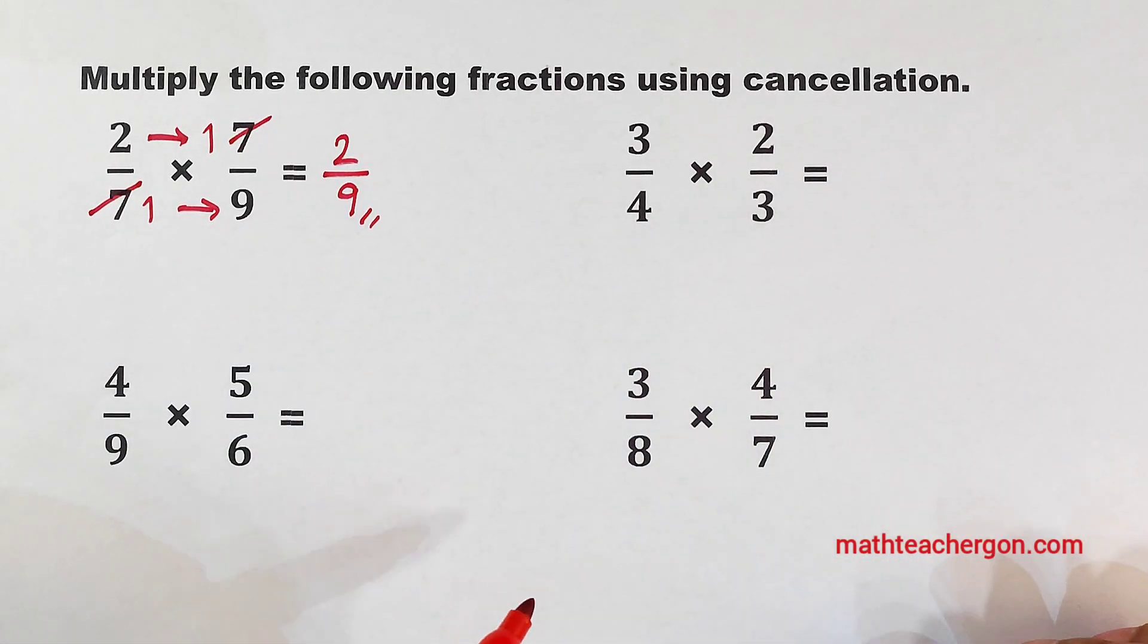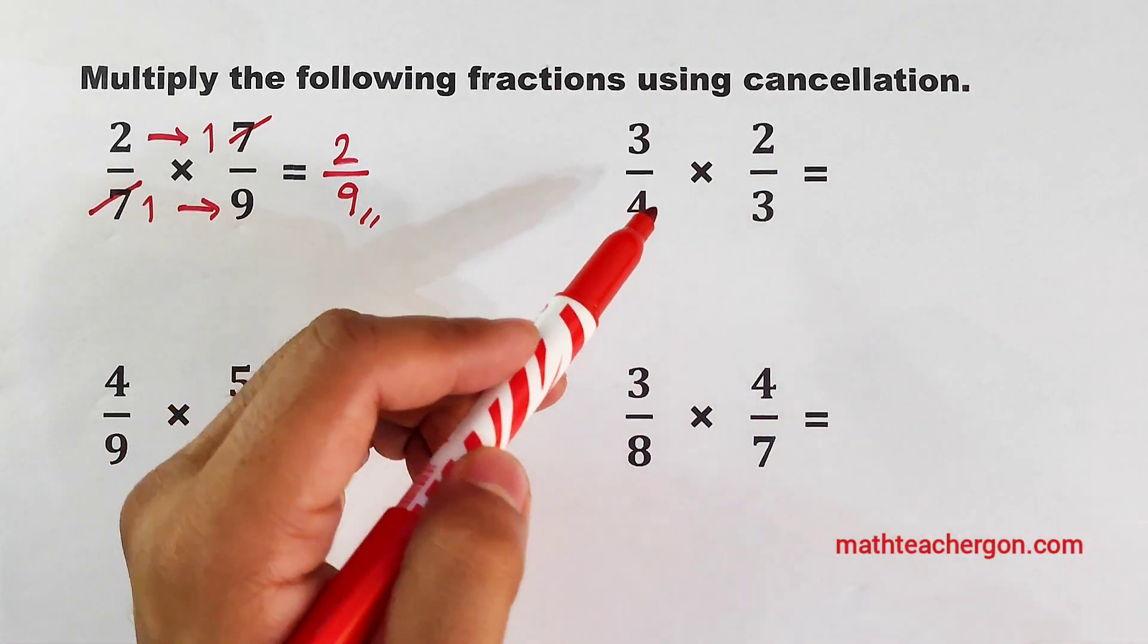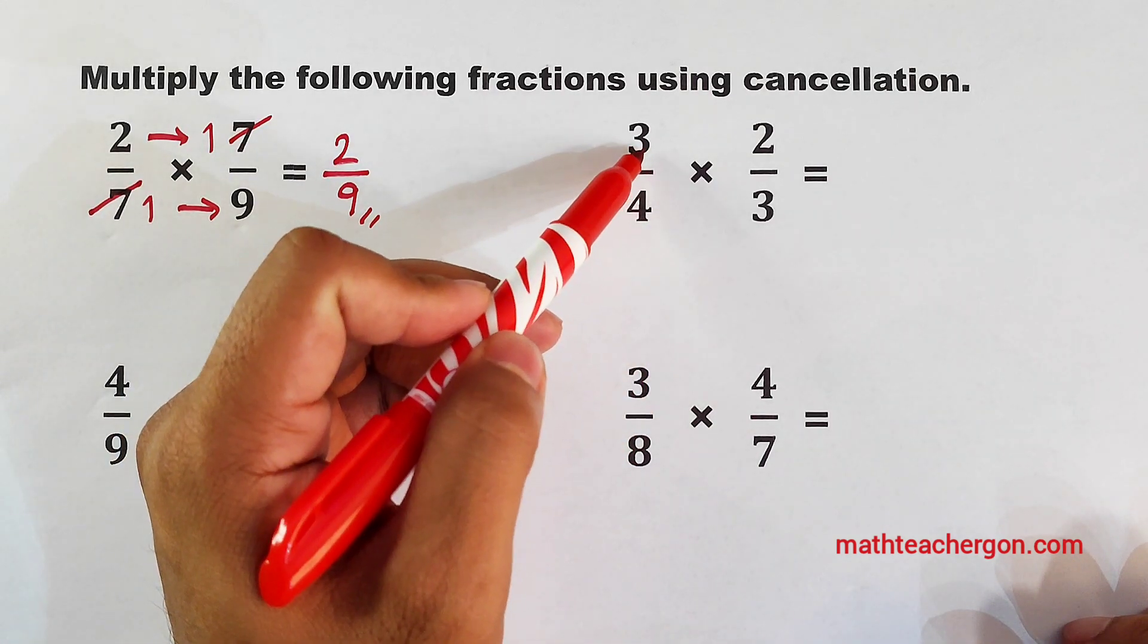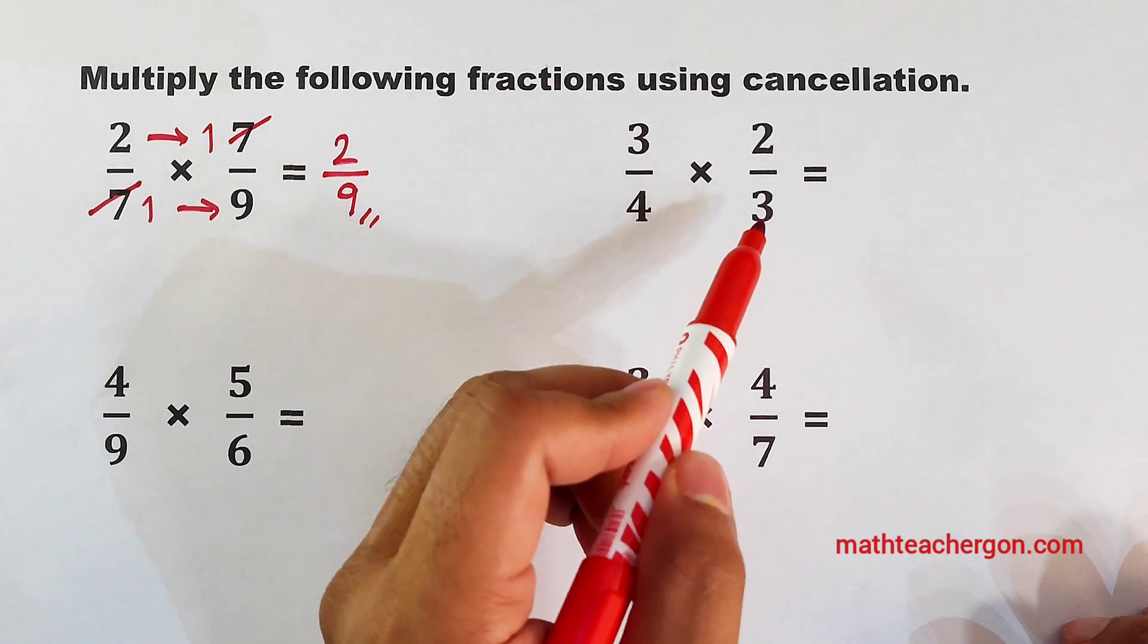Now let's proceed with example number 2. We have 3 over 4 times 2 over 3. As you can see, in the first fraction in the numerator, we have 3. We also have a 3 here.